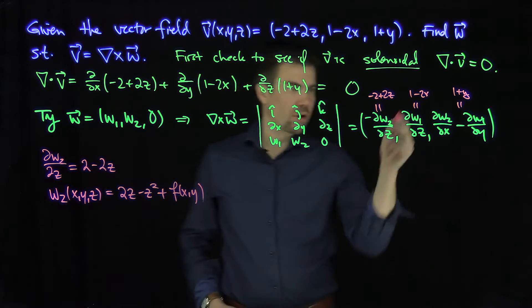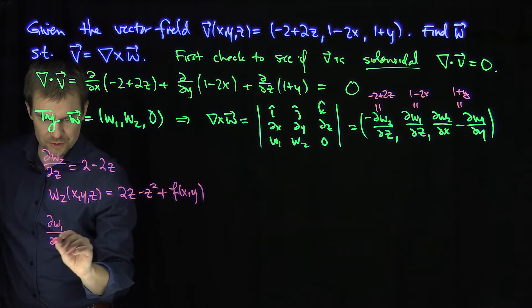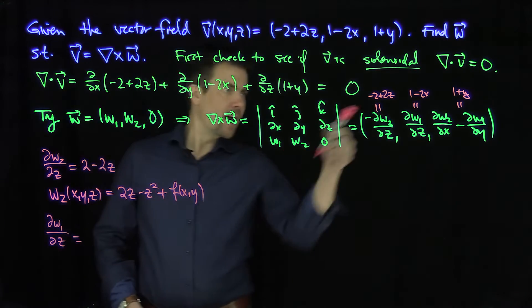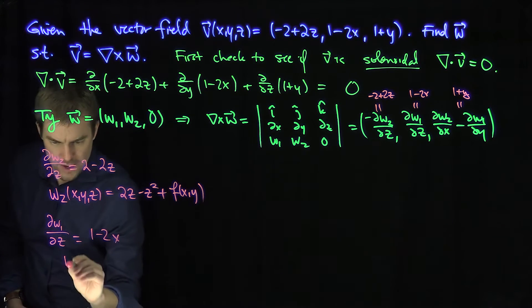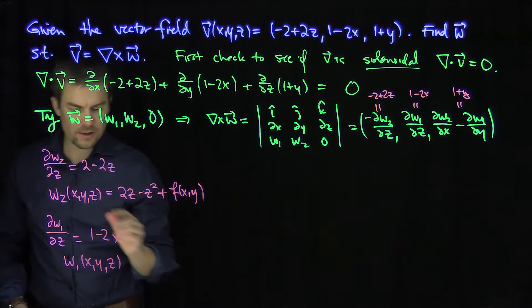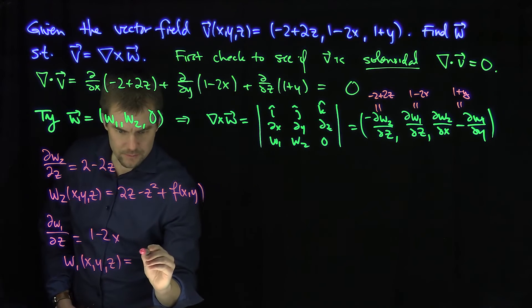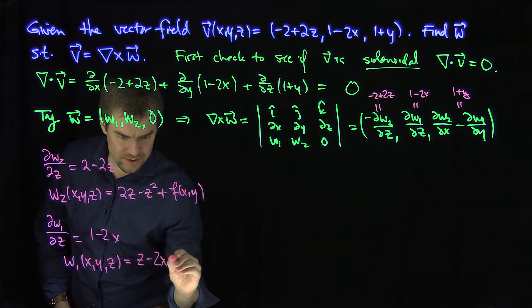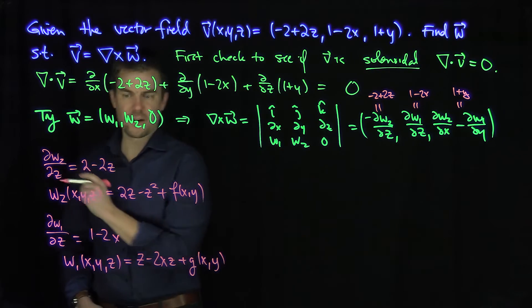Likewise, I can take this equation over here. Partial w1 partial z has to be equal to 1 minus 2x. And again, I'll do a partial z integral of this, and I'll get that w1 of x, y, z is equal to z minus 2xz plus some function g of x and y.